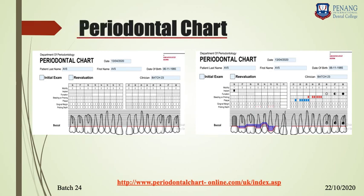Next is periodontal charting. I have given a link for the online periodontal charting tool. You have to literally practice with it — only then will you understand how to do periodontal charting. The probing depth, gingival margin or recession, furcation involvement, and bleeding on probing are all things I have spoken about. To understand how to measure and record them, go into the site and put in some values. It is mandatory to take a periodontal charting for a periodontitis case sheet, as it shows how severe the disease is.